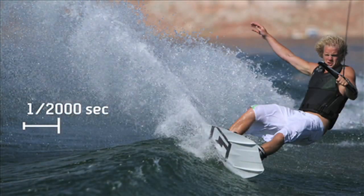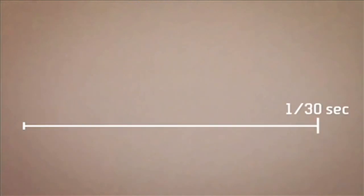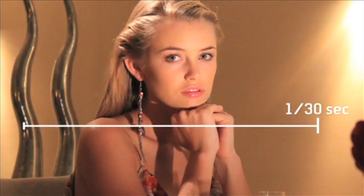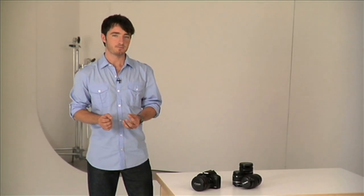Fast shutter speeds, like maybe two thousandths of a second, are used to generally freeze really fast motion. And slow shutter speeds, like a 30th of a second, are generally used in really low light situations. The lower the shutter speed, the richer the colours and the more detail you'll have in the image.